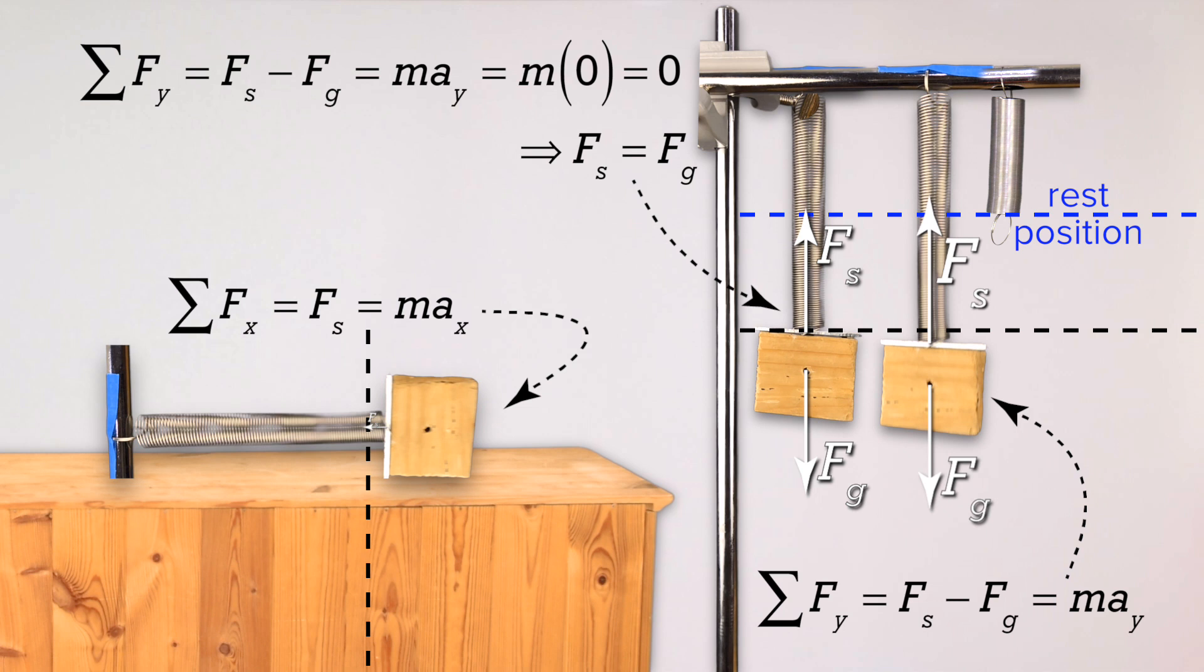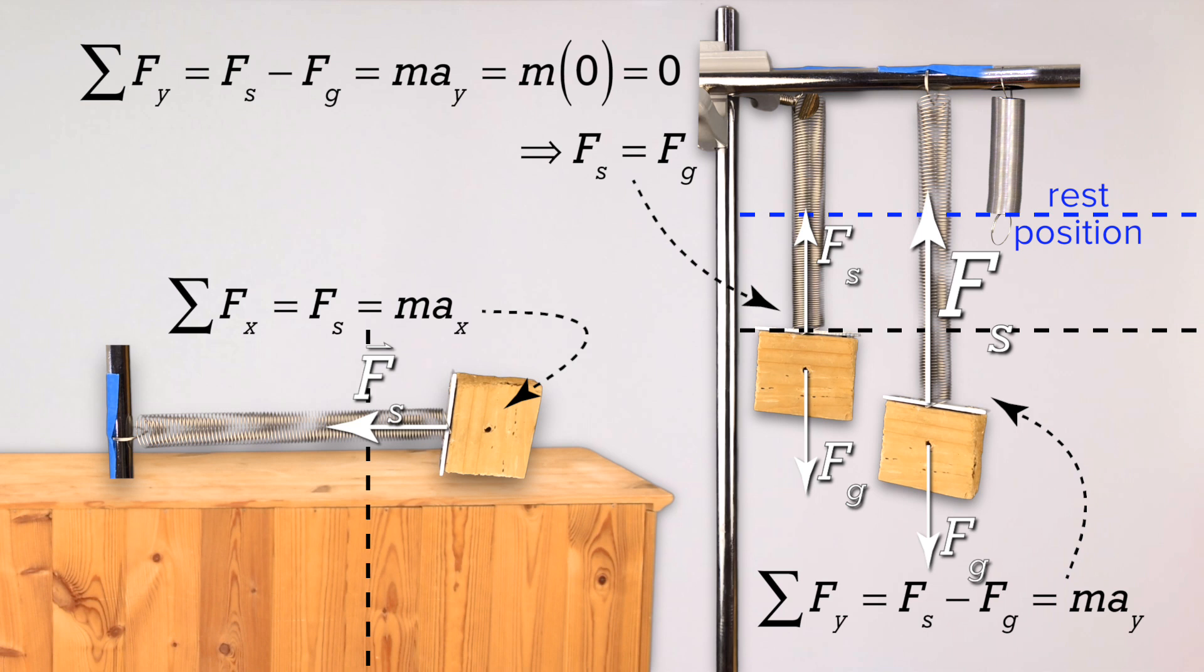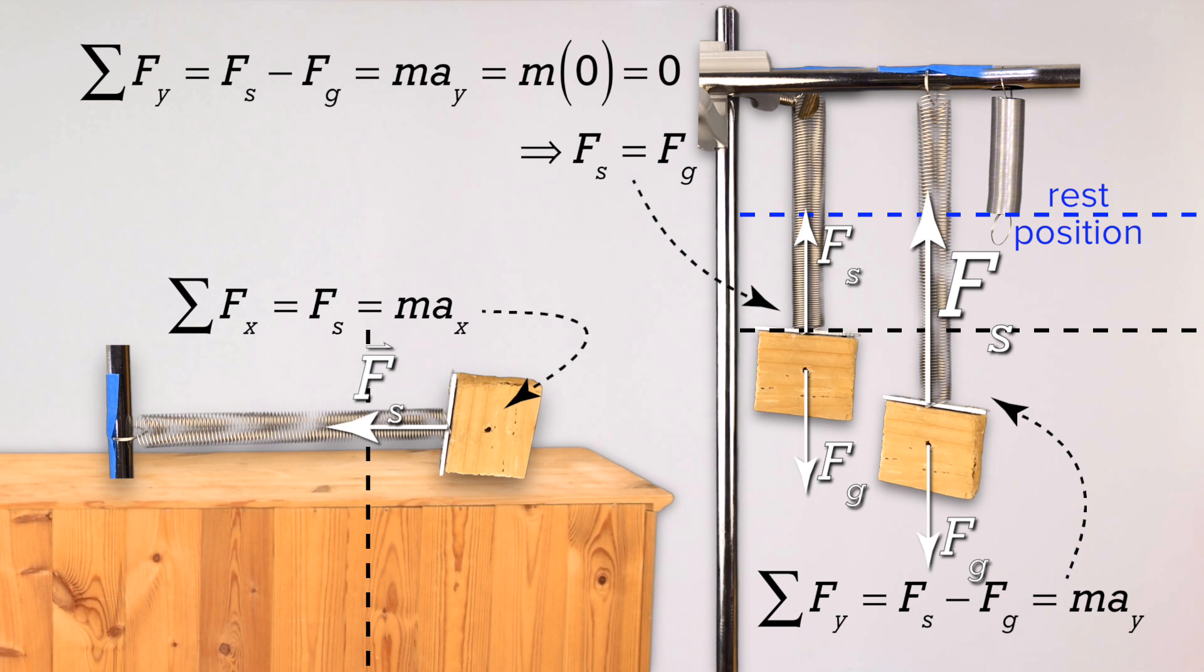Both the horizontal and vertical mass spring systems oscillate from position one to two to three to two to one to two to three to two to one and on and on because they are in simple harmonic motion.